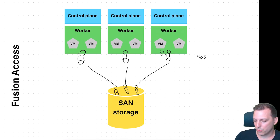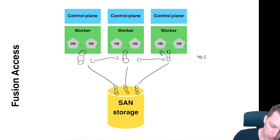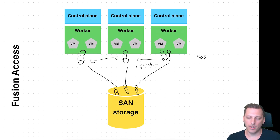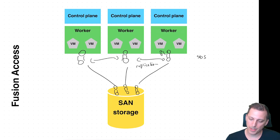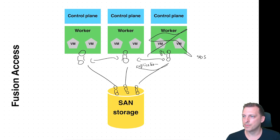We have three LUNs that we're exporting to our three workers. Now the software-defined storage needs to do replication on that layer — usually replication between those disks. Why? Because the software-defined storage does not know about the SAN storage or any replication going on there, and it needs to protect against failure in the OpenShift layer. If we were to lose a node, we want to move its VMs over to the still-existing workers, and we can only do that if we have replication, because we're not able to move the LUN to the other side. So we need that replication to keep the OpenShift environment safe.